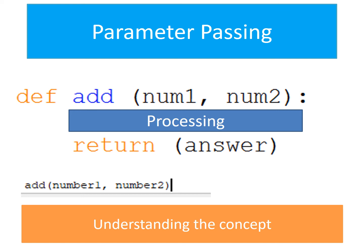Here is an example of parameter passing. You can see the main code calling add with number one and number two — this is being called after we've inputted two numbers. It's running the function add with those two numbers. But look how different variable names have been used. We should try to keep different variable names so that we're not getting confused as programmers, because they're actually two different variables saved in two different places in memory. This is parameter passing — passing values to functions or procedures — so that we can then do some processing, like adding them together, and return a value.